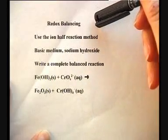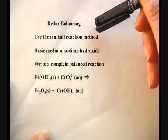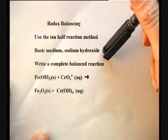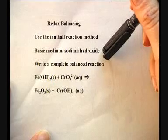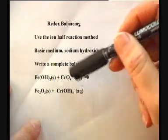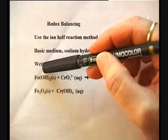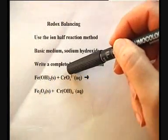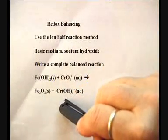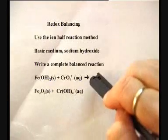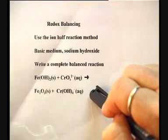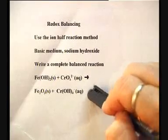Redox balancing using the half-reaction method. In the basic medium sodium hydroxide, the hydroxide ion and water molecule may be needed to balance the equations. Iron(II) hydroxide is oxidized by chromate to form iron(III) oxide and tetrahydroxochromate(III). Separate the process into half-reactions and define the oxidation and reduction using oxidation numbers.